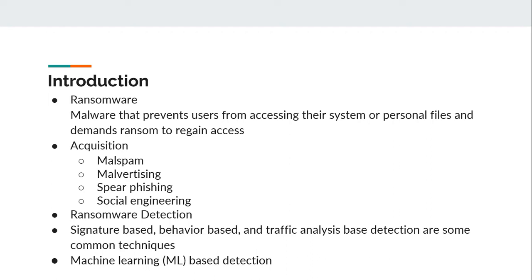How do we get ransomware? Malspam: to gain access, threat actors use spam where they send an email with a malicious attachment to as many people as possible, seeking who opens the attachment. Malvertising, or malicious advertising, is the use of online advertising to distribute malware where little or no user interaction is required. Spear phishing is sending malicious email to a specific target.